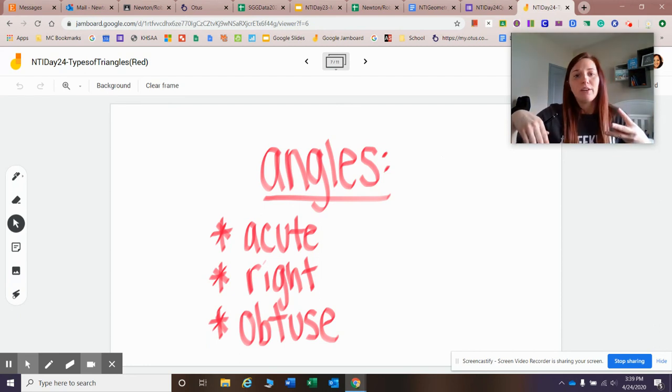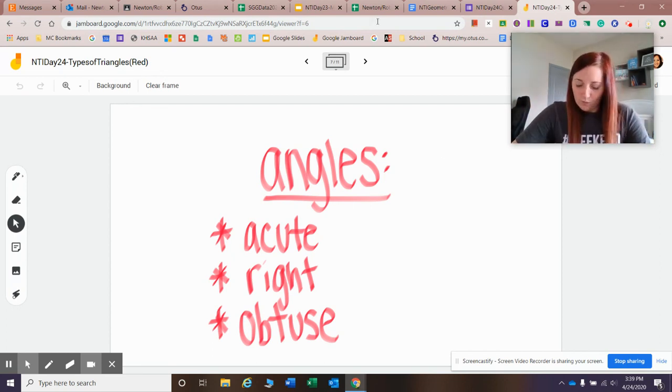So now we looked at the three different types for classifying triangles with their side lengths. Now let's look at the three different types with classifying triangles with their angles. So we already know that there are really four different types of angles that we've looked at. There's been acute, obtuse, right, and straight. Well, there can't be a straight triangle. So we are going to really look at acute, right, and obtuse for now.